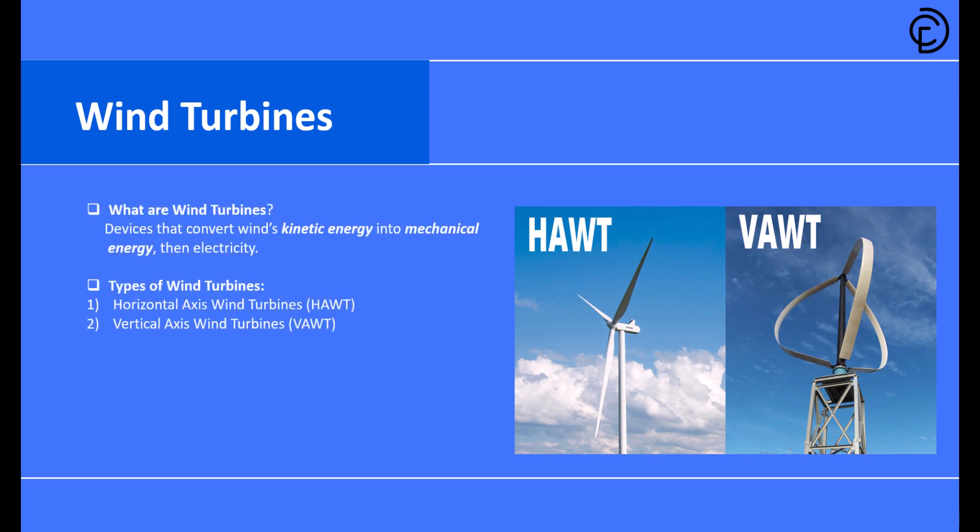Let's understand what wind turbines actually are and their main types. Simply put, wind turbines are devices that convert wind's kinetic energy into mechanical energy, which is then converted into electricity. Think about it like this: when you feel the wind pushing against your hand out of a car window, that's kinetic energy. Wind turbines harness this pushing force and turn it into useful power.